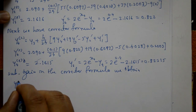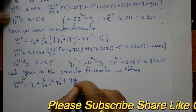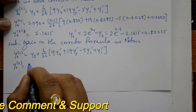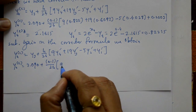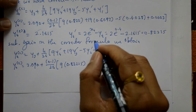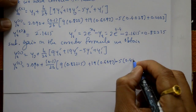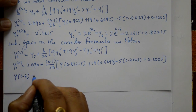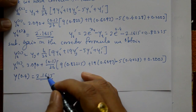Applying the corrector formula again: y4_c equals y3 plus h over 24 into (9 y4-dash plus 19 y3-dash minus 5 y2-dash plus y1-dash). Substituting y4-dash = 0.8222, then 19 × 0.6097, minus 5 × 0.4028, plus 0.2003. This gives y4_c equal to 2.1615. Since the last two corrector values are the same, this is the required solution: y(0.4) = 2.1615.